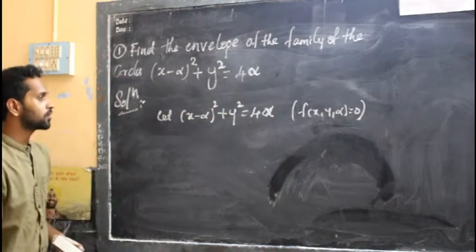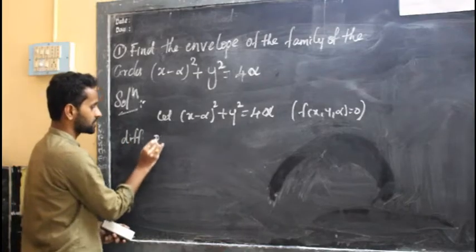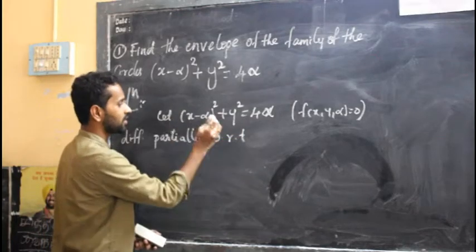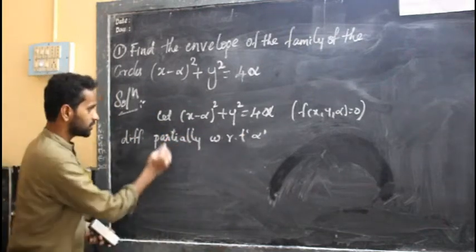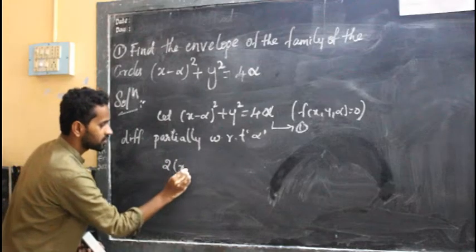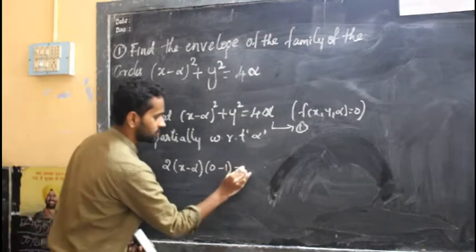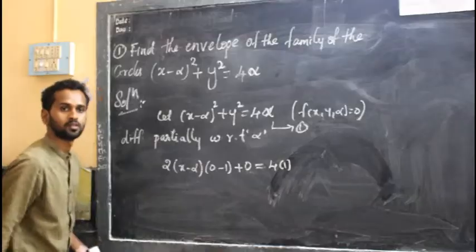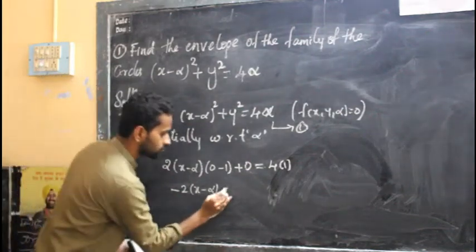Now, I am going to find dou f by dou alpha — that means, differentiate partially with respect to the parameter alpha. Here x and y become constants. Differentiating the entire equation: 2 into x minus alpha, where x differentiation is 0 and alpha differentiation is minus 1. y squared differentiation is 0, equal to 4 alpha differentiation is 4. This becomes 2 into x minus alpha into minus 1, giving minus 2 x minus alpha equal to 4.